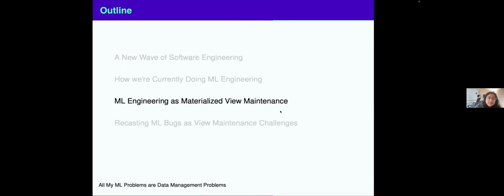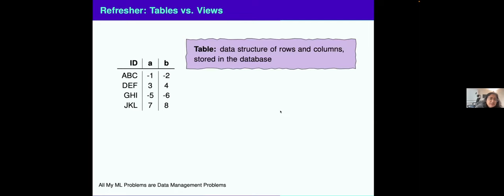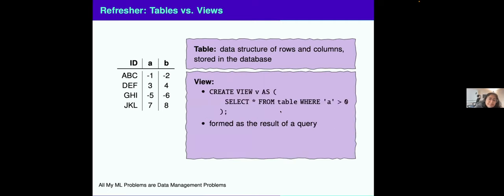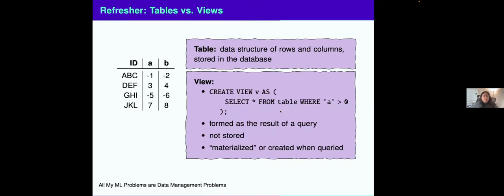What does it mean to have consistency in DAGs? Now, I will pitch ML engineering to you as materialized view maintenance. Don't worry too much if you don't remember what views are, materialized views are. I'll do a very brief refresher. Suppose you have a table. Tables, you are all familiar with this, data structures of rows and columns stored in your database. A view is a virtual manipulation of this data. It's formed as a result of a query, but it's not material, it's not stored separately. You can query this view as you would query a table. And when you do query the view, then the outputs of this view is then materialized or created when it's queried.